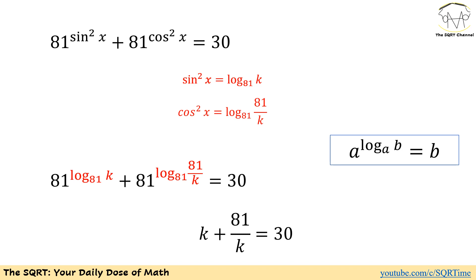Now we have sine squared of x and cosine squared of x and we are going to replace all these values in the original equation. 81 to the power of log of k in base 81 simplifies to k, and 81 to the power of log of 81 over k in base 81 simplifies to 81 over k. So we will have k plus 81 over k equals to 30.